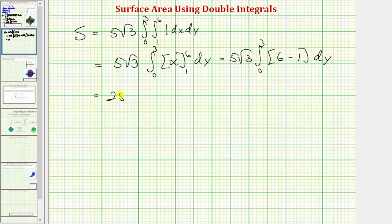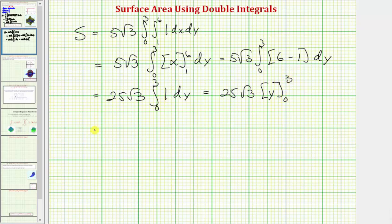So now we have 25 square root of three times the integral from zero to three of 1 dy. The antiderivative of one with respect to y is just y, and we integrate from zero to three. So we have 25 square root of three times the quantity — when y is three we have three, when y is zero we have zero — giving us 25 square root of three times three. So the exact surface area is equal to 75 square root of three.